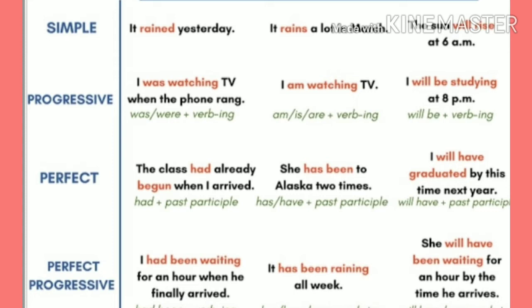In present perfect progressive we say 'it has been raining all week.' And for future perfect progressive we say 'she will have been waiting for an hour by the time he arrives.' So here we see that we basically change the verb to indicate which tense we are writing in. According to the tense, only the verb changes.